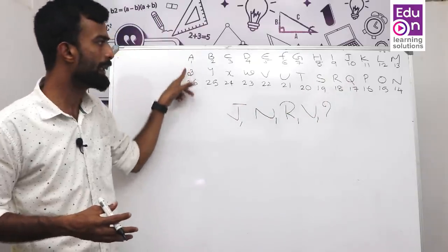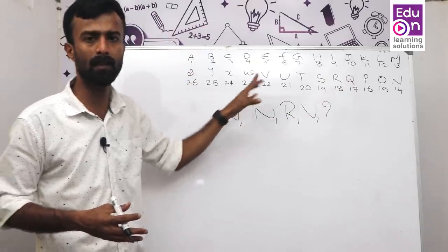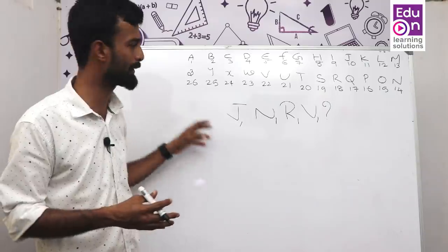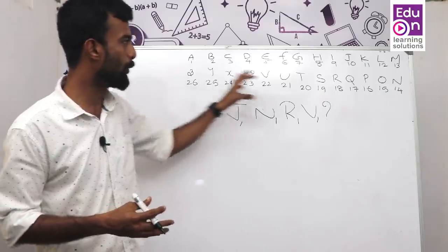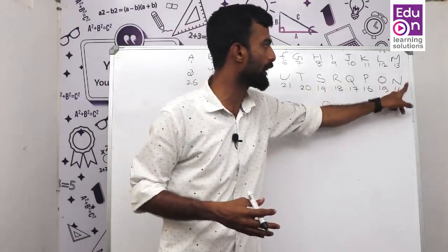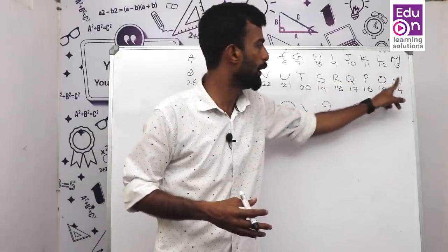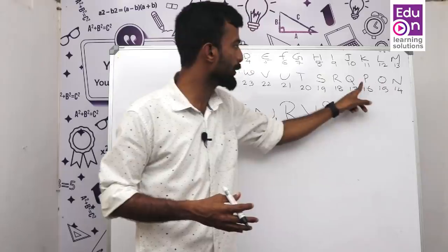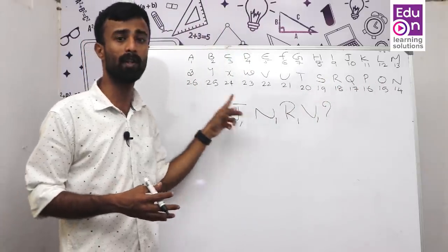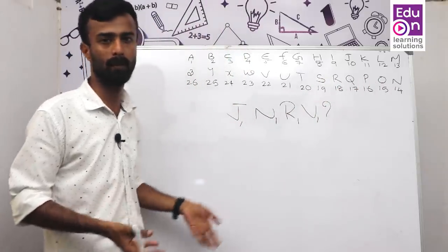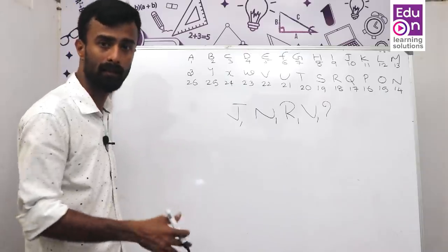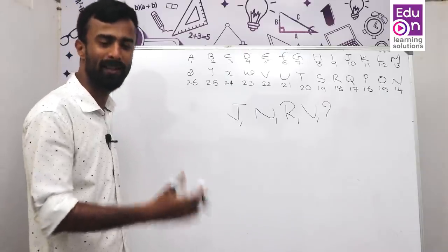We will discuss other types of questions here. The alphabet order is: M, N, O, P, Q, R, S, T, U, V, W, X, Y, Z. We will split the code and decode.